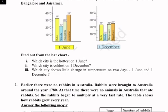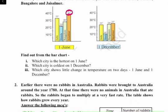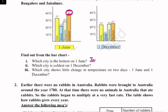We can see that the temperature of Jaisalmer is 38 degrees Celsius, which is the highest temperature compared to the other cities. So the answer is Jaisalmer — the hottest city is Jaisalmer.